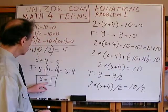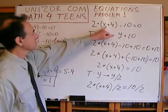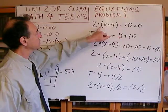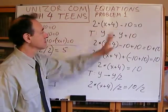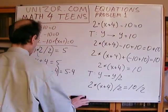If we do the checking, we put x equals 1: it will be 5 times 2 equals 10, minus 10 equals 0. Everything is fine.